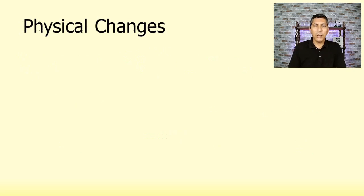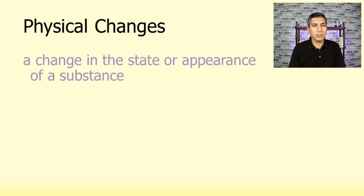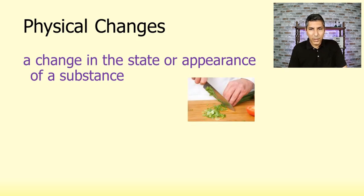Now, in the same vein here, we're going to talk about physical changes and chemical changes as well. Physical changes refer to a change in the state or the appearance of a substance. So in this picture here, we have what looks like a chef who is cutting maybe some onions or some sort of a vegetable there. Well, that's a physical change. It's still whatever it was to start with, it's just in smaller chunks now. That's a physical change.